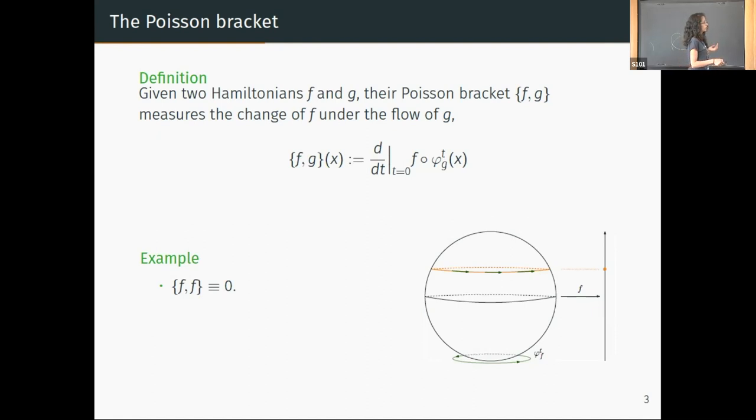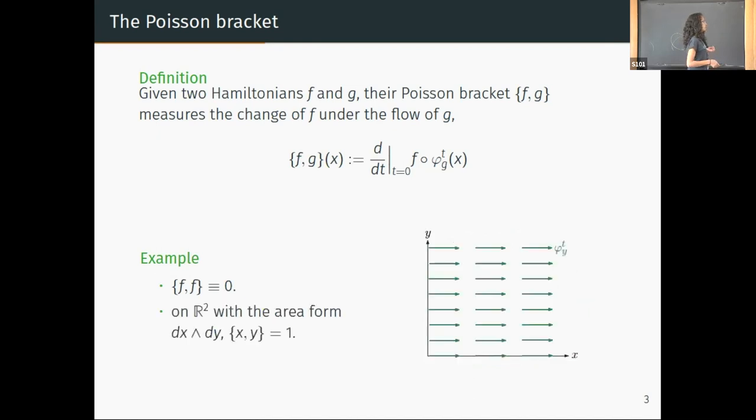Another example: if we take R² with the standard area form and take the functions f and g to be the coordinate functions x and y, then the flow induced by y is basically a shift in the x direction with constant speed one. The Poisson bracket {x,y} measures how x changes with respect to this flow, so it should be equal to one.